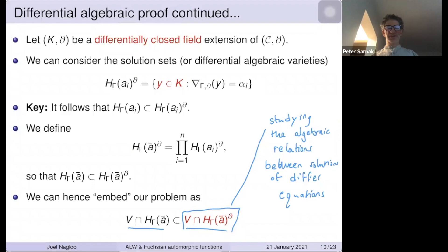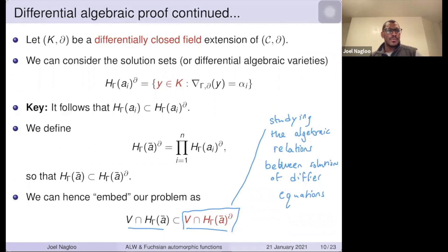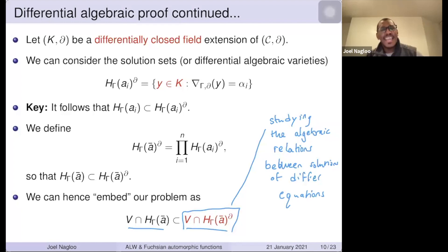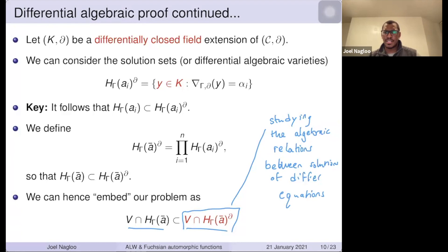Question about an example of gamma which is not SL(2,Z), like a Hecke triangle group which is non-arithmetic — is there an interesting application? So yes, we do have examples of those. The Axe-Lindemann-Weierstrass theorem is a more natural setting for differential equations. What we see here is simply a special case of a more general question. Let me explain the setup and show how it's related.